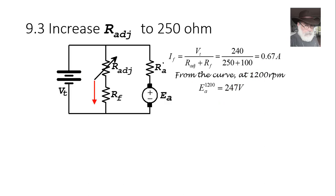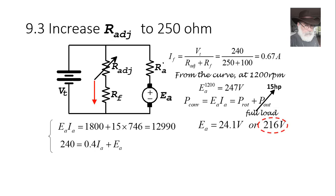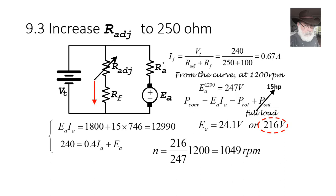We compute the actual Ea from the circuit. The machine is still delivering rated power, so the converted power remains 12,990 watts. Using the same two-equation approach, Ea is again 216 volts. Comparing 216 V to the curve reference of 247 V, the actual speed works out to 1049 RPM. So fully loaded, the motor now runs at nearly the same speed (1049 RPM) as it did idling before — demonstrating that we can control motor speed by adjusting the field resistor.